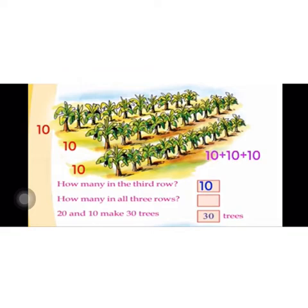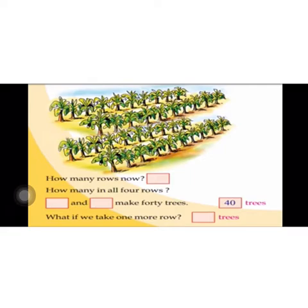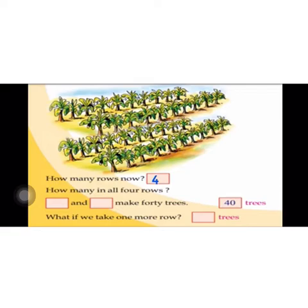Ten plus ten plus ten? How many in the third row? Fourth row is total 40 banana trees. 30 and ten make 40 trees. Right? Yes. Next.